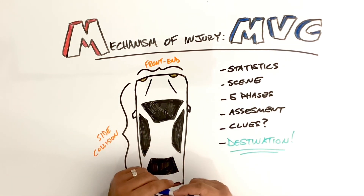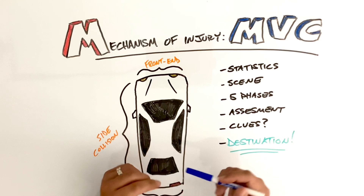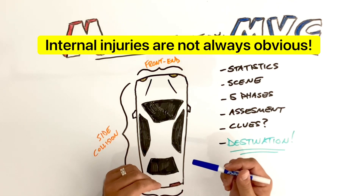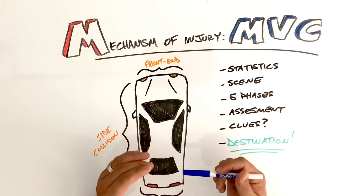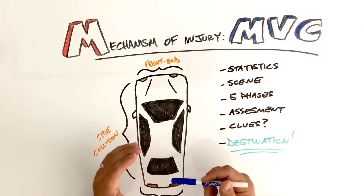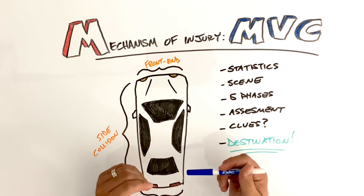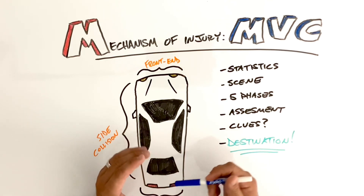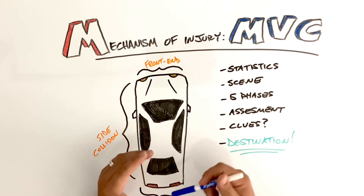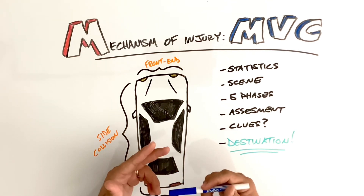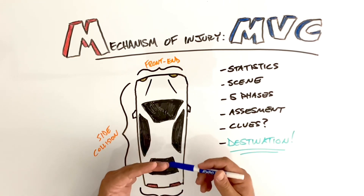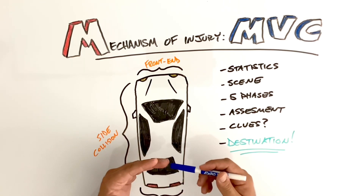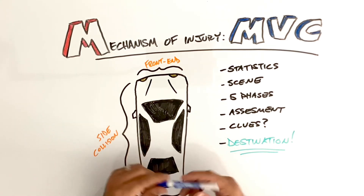It is important to note that internal injuries are not always obvious. If you have a splenic rupture, or one of your solid organs takes a hit and is lacerated internally, you have to do a proper assessment of that patient — look at vital signs, do a rapid head-to-toe, do a detailed exam, and really pay attention to what's going on so you can better treat them.